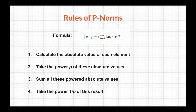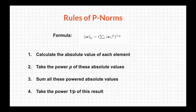The formula for the p-norm of a vector is: the summation of the absolute values of each element x_i raised to the power p, and then the entire thing raised to the power 1/p — essentially calculating the p-th root. The steps are: first, calculate the absolute value of each element; second, raise each to the power p; third, sum all those powered absolute values; and finally, take the power 1/p of the result.